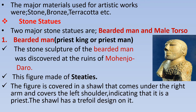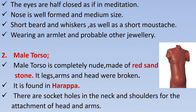There are two major stone statues: the bearded man and the male torso. The bearded man was a priest king or priest man. The stone sculpture of the bearded man was discovered at the ruins of Mohenjo-daro. This figure is made of steatite. The figure is covered in a shawl that comes under the right arm and covers the left shoulder, indicating that it is a priest. The shawl has a trefoil design on it. The eyes are half-closed as if in meditation. The nose is well-formed and medium-sized, with a short beard and a short moustache. He is wearing an armlet and probably other jewellery.